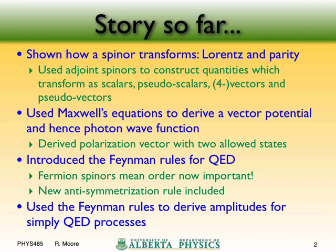We looked at e-mu-minus goes to e-mu-minus, which had a T-channel diagram where we have the muon coming in, the muon going out, the electron here, the electron there, and then a photon propagator. We used this diagram to calculate the amplitude, and this is where we're going to start this lecture.